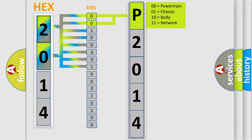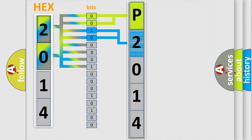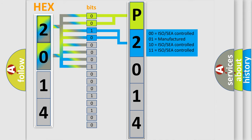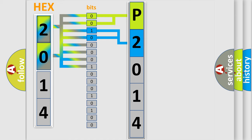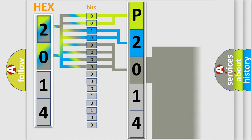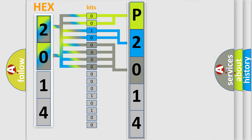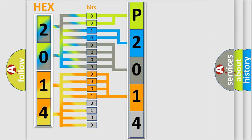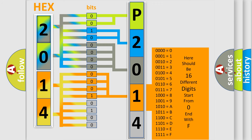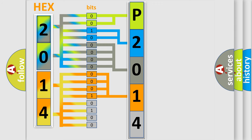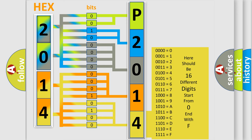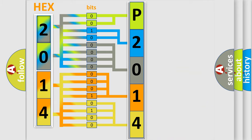The next two bits determine the second character. The last bits of the first byte define the third character of the code. The second byte is composed of a combination of eight bits. The first four bits determine the fourth character of the code, and the combination of the last four bits defines the fifth character. A single byte conceals 256 possible combinations. We now know in what way the diagnostic tool translates the received information into a more comprehensible format.